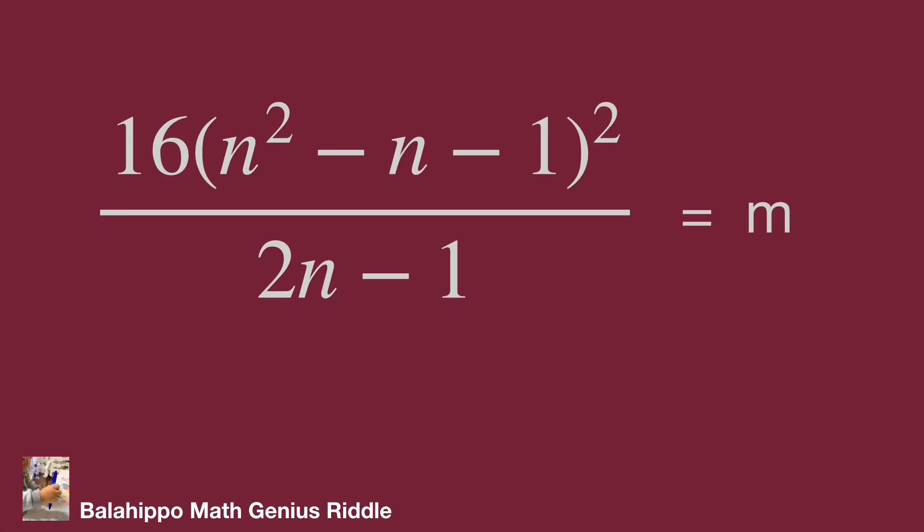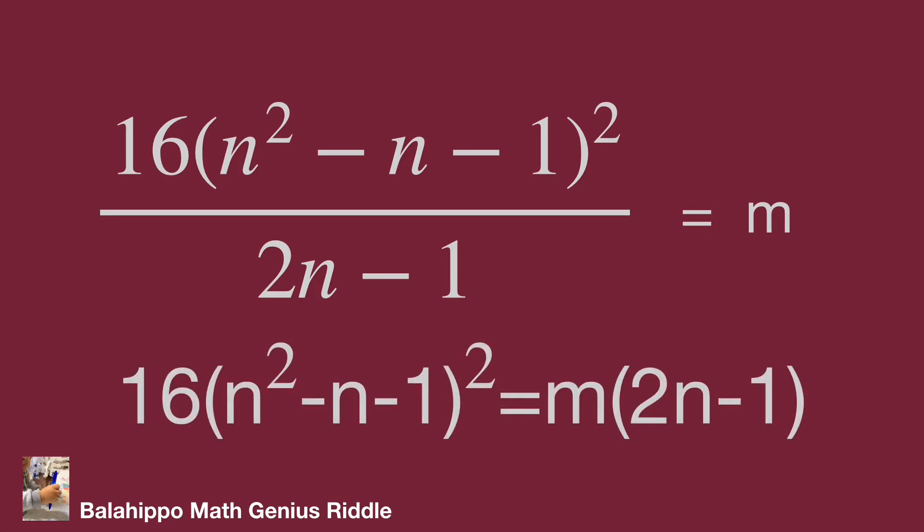After that, develop this fraction as 16 times quantity n squared minus n minus 1 squared equals m times quantity 2n minus 1. That means 16 times quantity n squared minus n minus 1 squared divided by 2n minus 1 is evenly divisible. The fraction is m with no remainder.